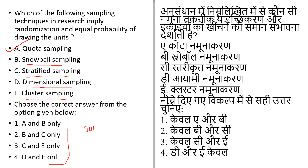Remember, it is a sampling technique. For a participant to be considered a probability sample, they must be selected using random selection. The most critical requirement of probability sampling is that everyone in the population has a known or equal chance of getting selected, because we randomly select the samples.